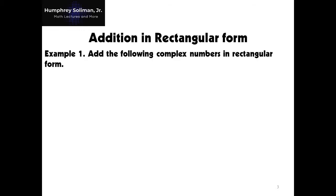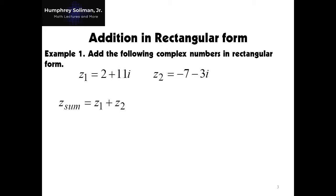Thank you so much. Now, in addition of complex numbers using the rectangular form, we have here example number 1. We have z1 equals 2 plus 11i, and z2 equals negative 7 minus 3i. We will call the sum of z1 and z2 as z sum.